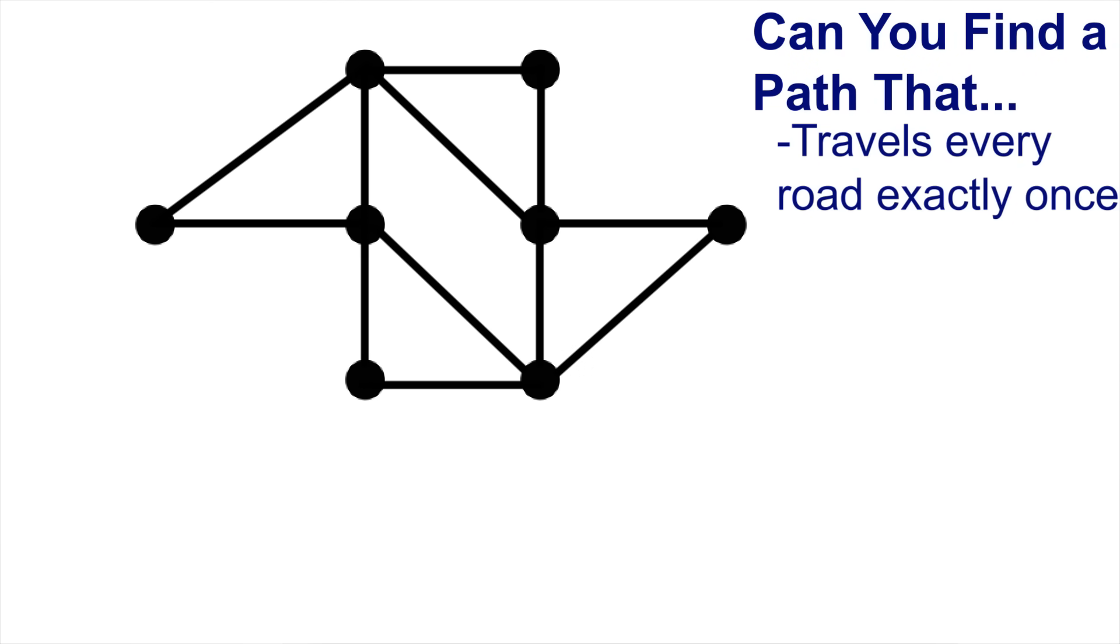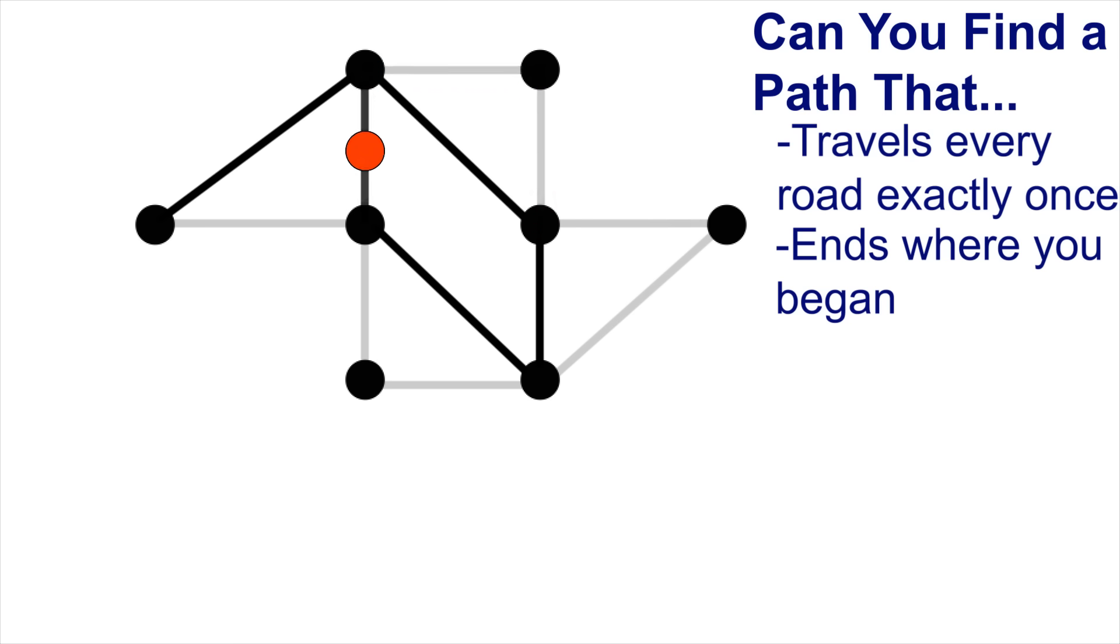If we have a bunch of nodes that represent locations, maybe cities, and edges which represent roads between them, can you find a path that travels every road exactly one time and ends exactly where you began? So you can pick where you start, and once you use a road, you can never use it again. I'll just tell you the answer is yes. You can go to each city and use every road only once. There is more than one way to trace this path out, but this is one way to go over every edge only once and end up exactly where you started.